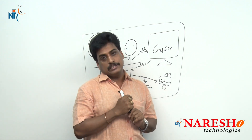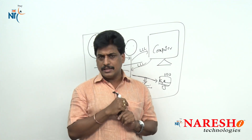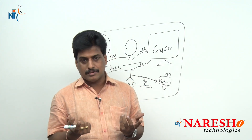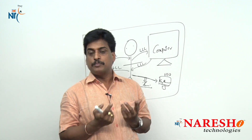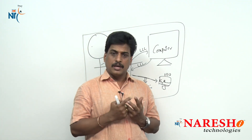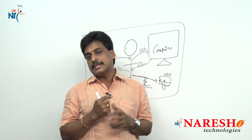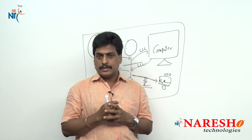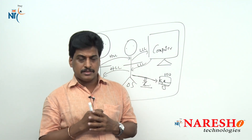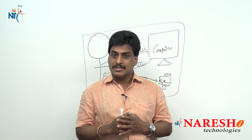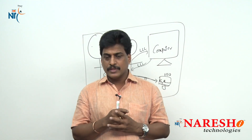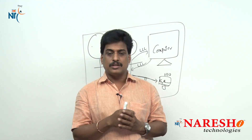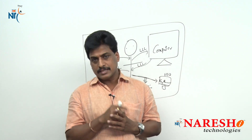Third is multi-user, multitasking. Any number of users can run any number of tasks simultaneously. These are the latest generation operating systems, including smartphone operating systems. So, operating systems are majorly divided into three types: SUST — single user, single tasking; MUST — multi-user, single tasking; and MUMT — multi-user, multitasking.